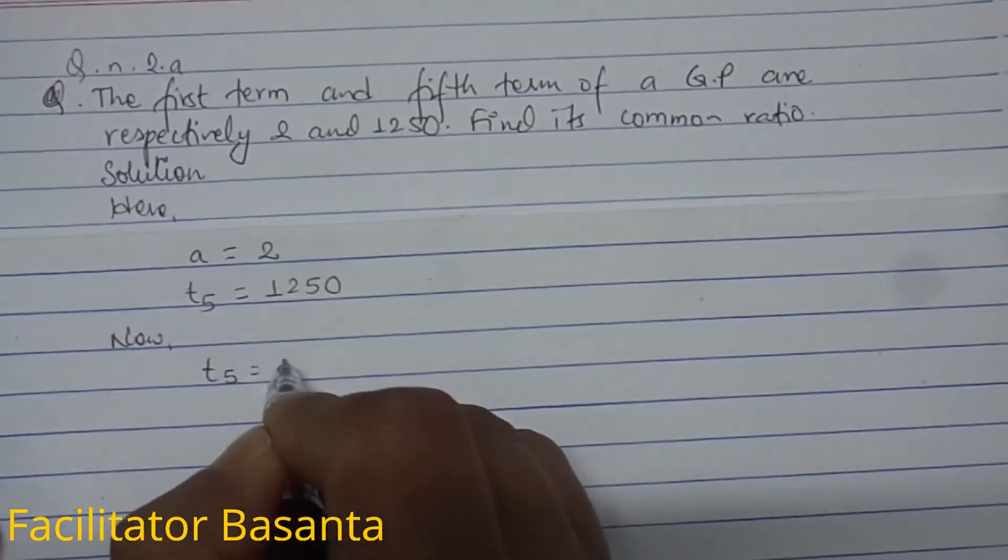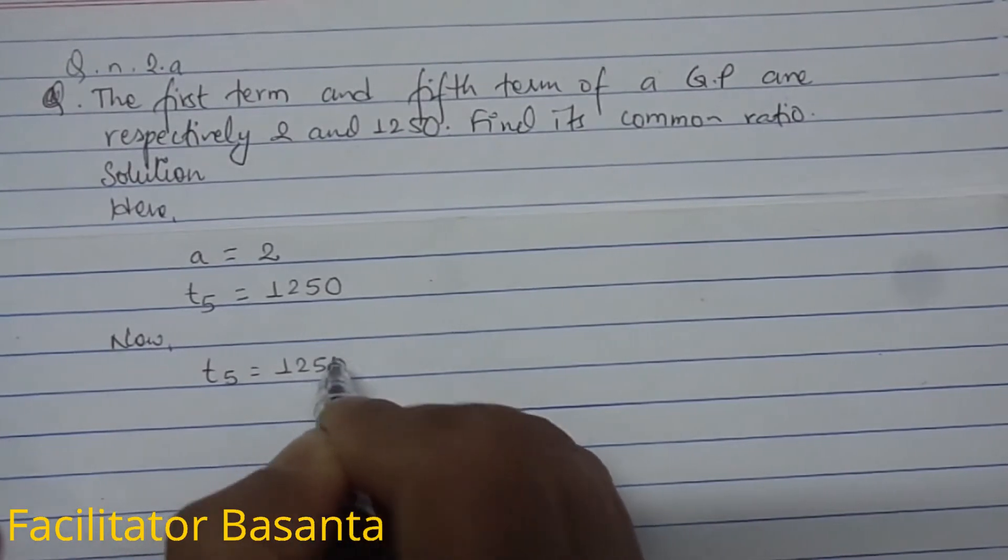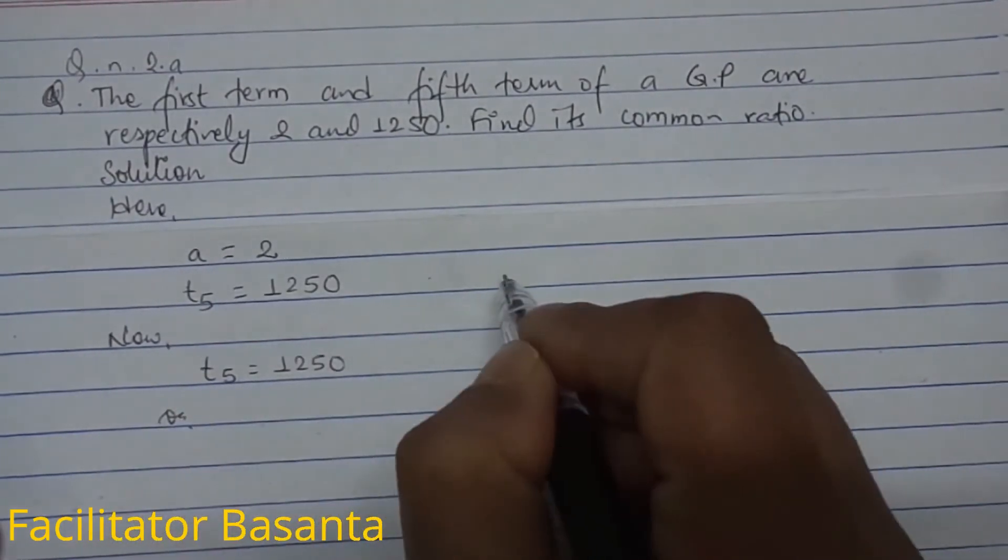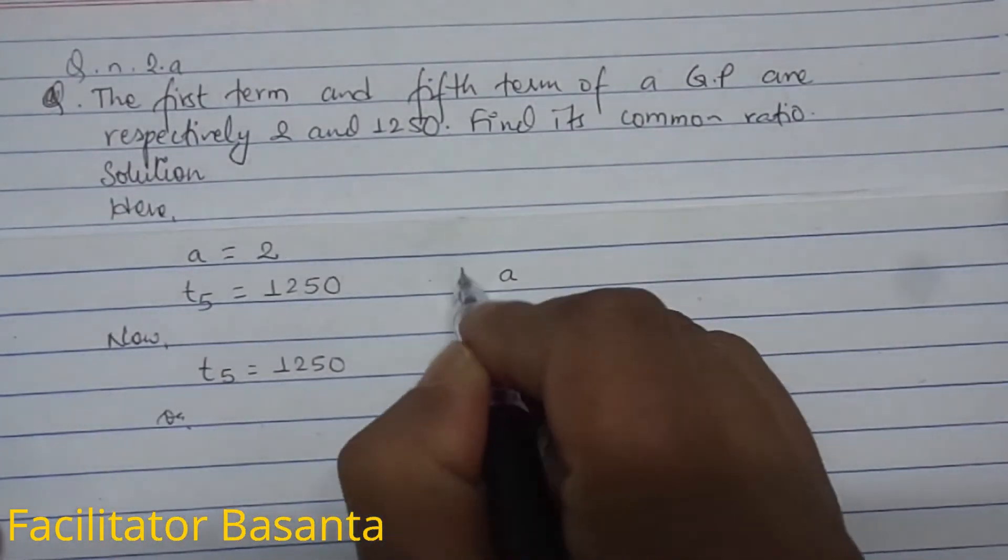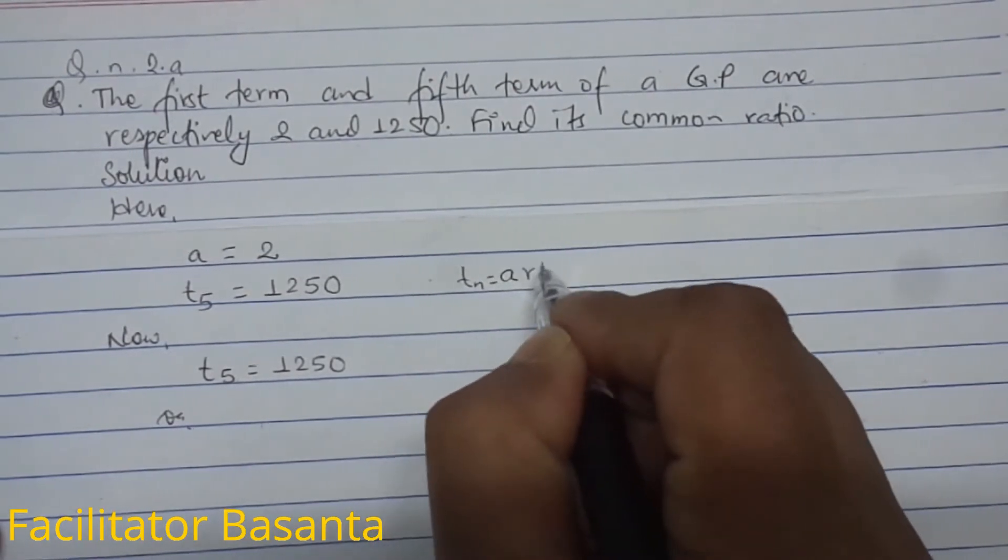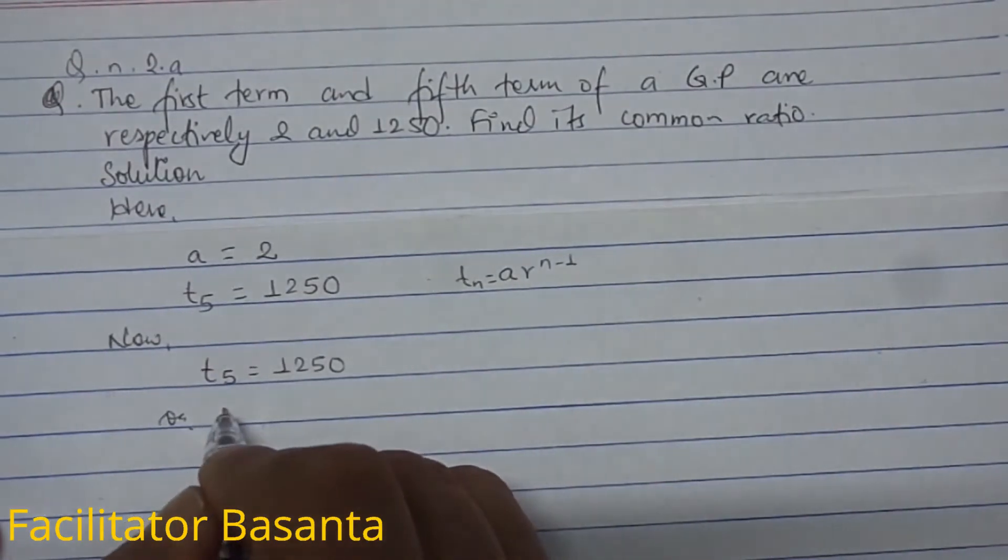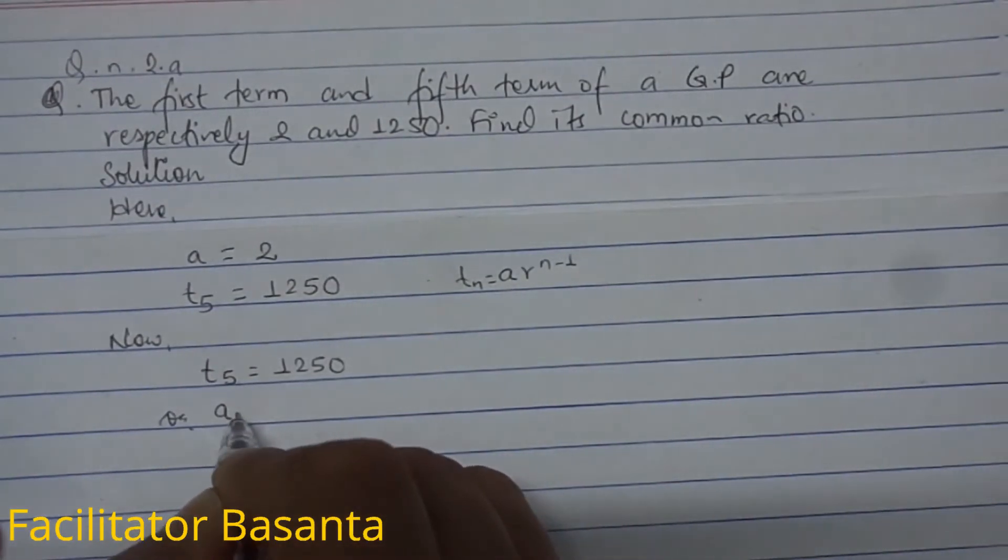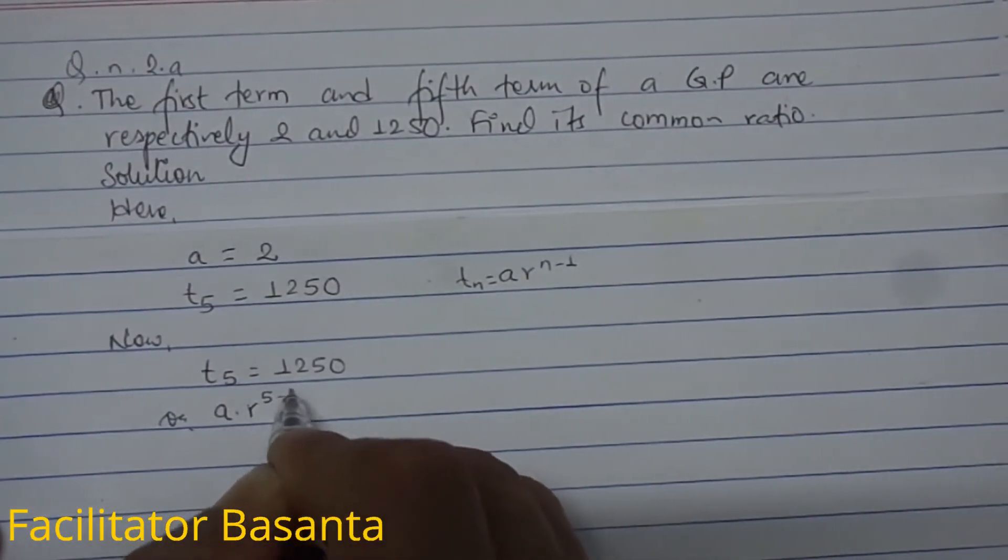Taking t5 equals 1250. The general term in geometric progression is given by tn equals a times r to the power n minus 1. Here, t5 means a into r to the power 5 minus 1, which equals 1250.